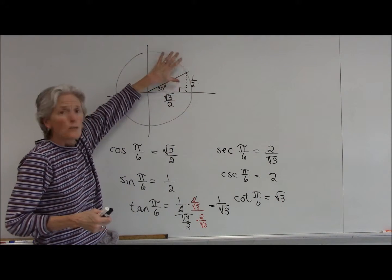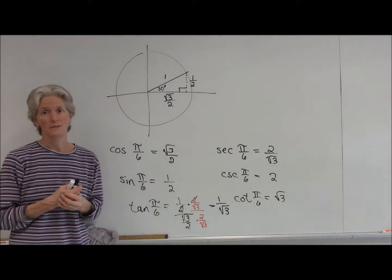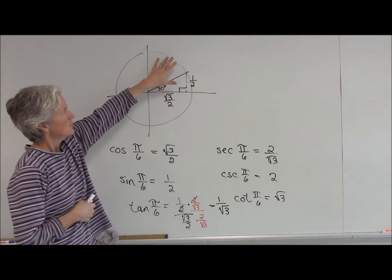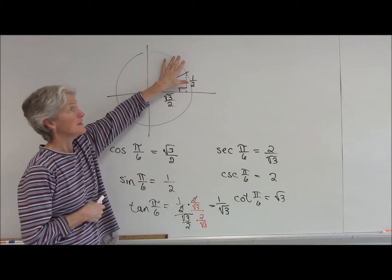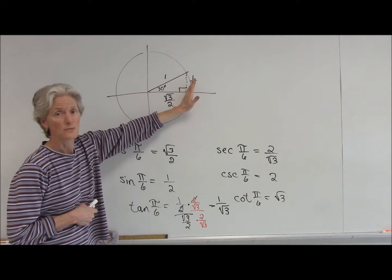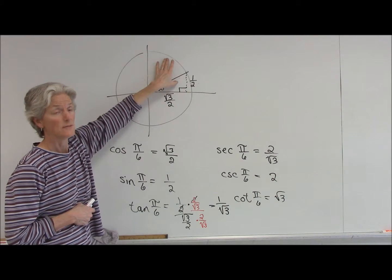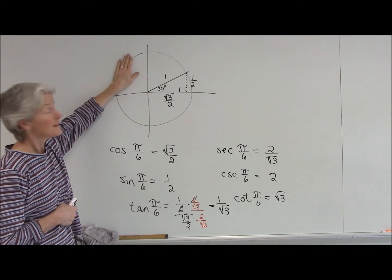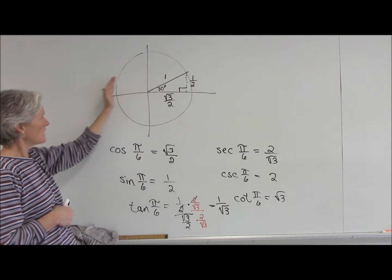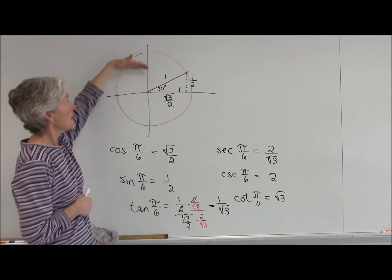Now, this would happen exactly in all the other quadrants with just different positives or negatives. Cosine and sine are both positive in this first quadrant because x associated with cosine and y associated with sine are positive. Over in this second quadrant, your cosines will be negative since x is negative. Sine will be positive.